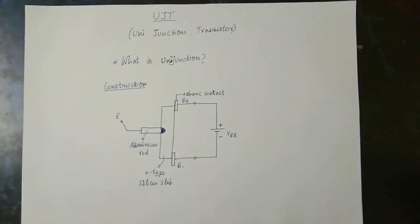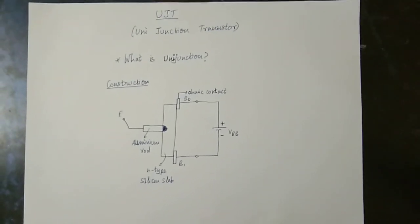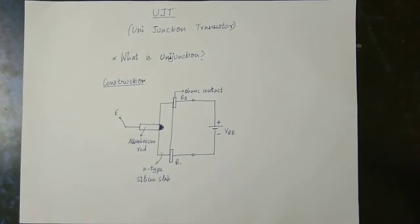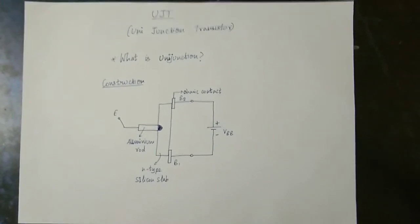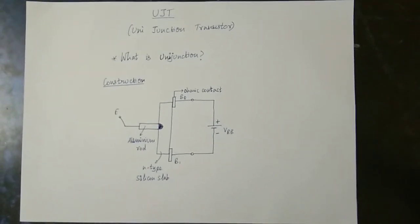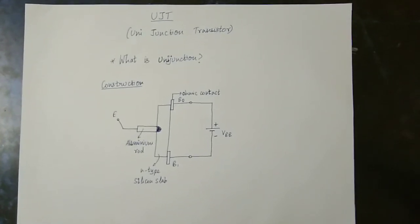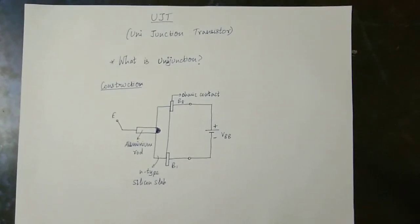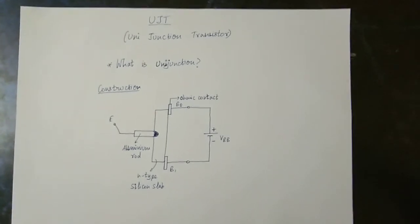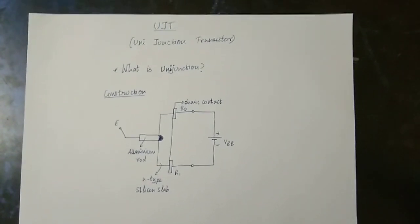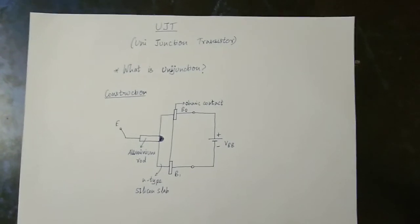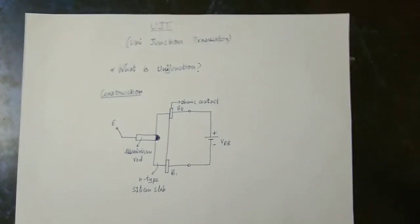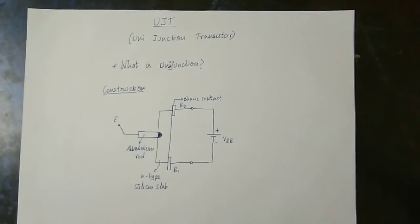What is UJT? Unijunction Transistor. It can be unipolar, bipolar, or unijunction. This type of transistor has a special characteristic. Let's talk about PN Junction Diode — basically, you can see that there is a diode within a diode. If you can see it, it's called Unijunction Transistor.